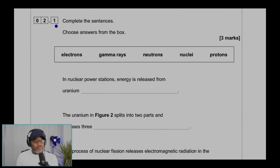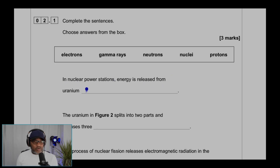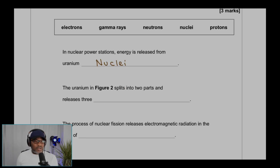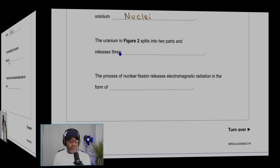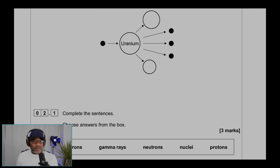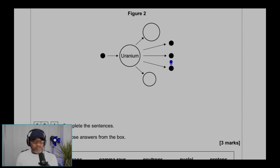Question 2.1: complete the sentences, choosing answers from the box — electrons, gamma rays, neutrons, nuclei, protons. In nuclear power stations, energy is released from uranium nuclei, and the uranium splits into two parts and releases three particles. If you look at the diagram, these three particles released are neutrons.